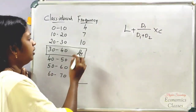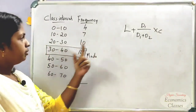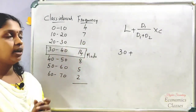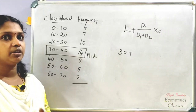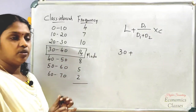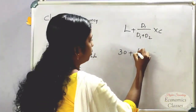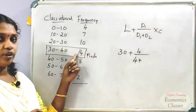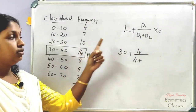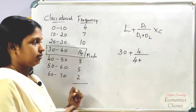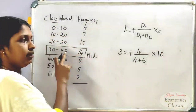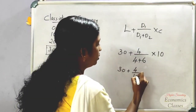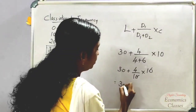D1 is the difference between the modal class frequency and the pre-modal class frequency: 14 minus 10 equals 4. D2 is the difference between the modal class frequency and the post-modal class: that is 6. The class interval is 10. So: Mode = 30 + 4/(4+6) × 10 = 30 + 4 = 34.